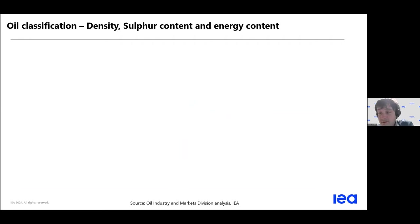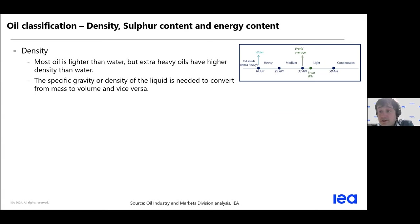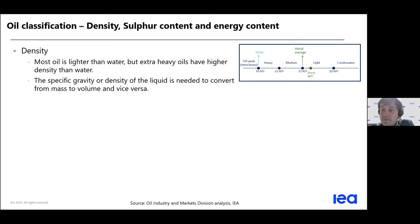In terms of physics, there are a few concepts essential to understanding oil. The first is density. Most oil products are lighter than water, but not all. Here you can see a scale in API — American Petroleum Institute — units, used to measure oil density. 10 corresponds to water. As the API index increases, density decreases, so oil products are lighter. There are a few products, like oil sands, which have a higher density than water.